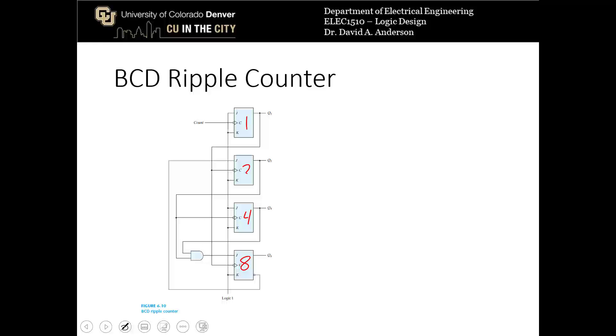Now as you can see a logic 1 is the input to J1 and K1 which means that that Q1 always toggles. The input to J2 is actually, as you can see, if we trace this down here, is Q8 prime.